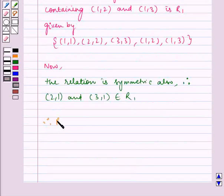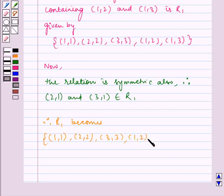Therefore, R₁ becomes {(1,1), (2,2), (3,3), (1,2), (1,3), (2,1), (3,1)}.